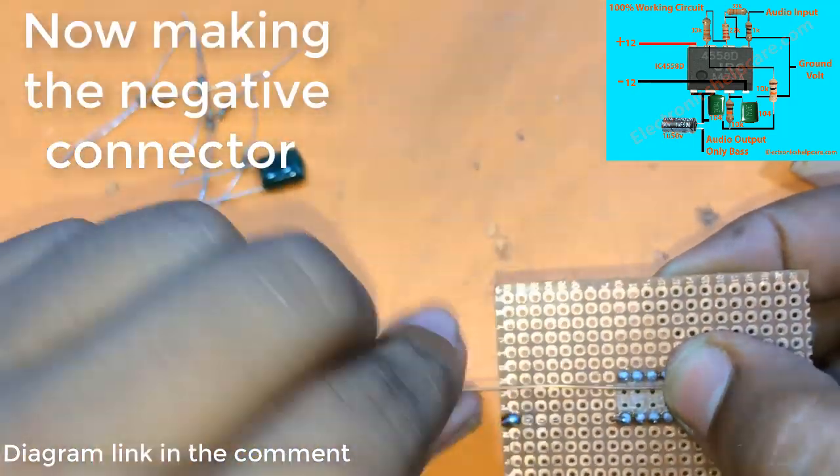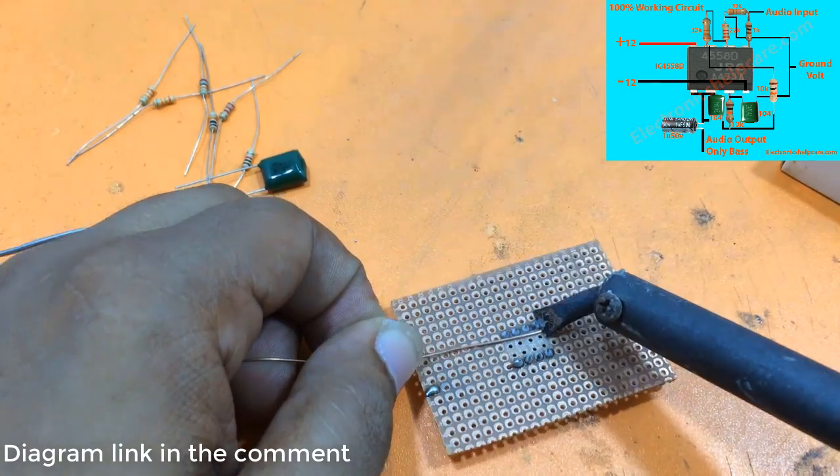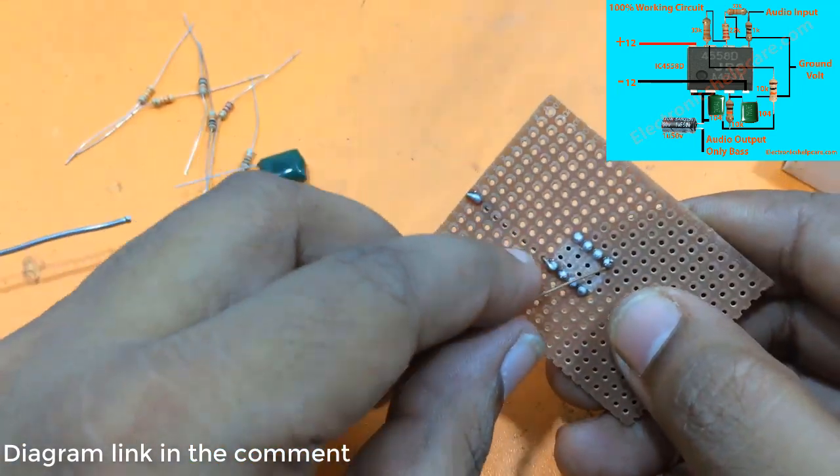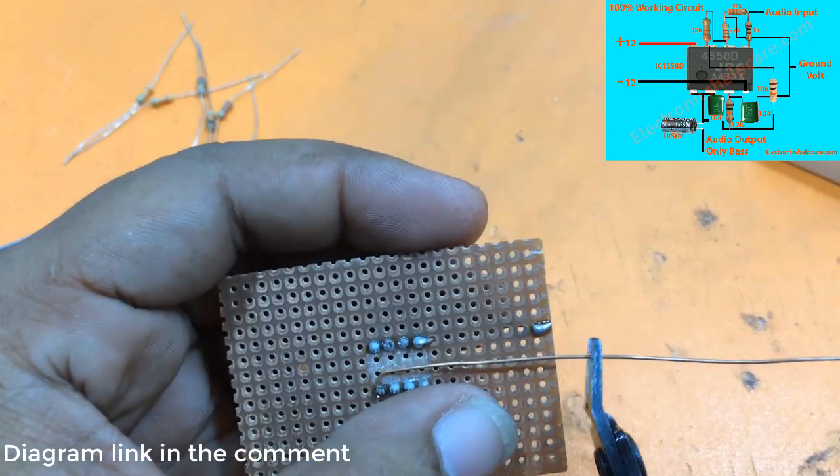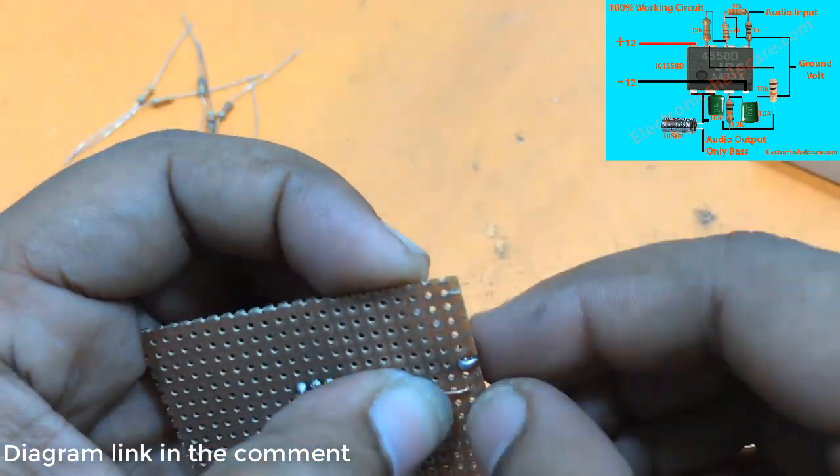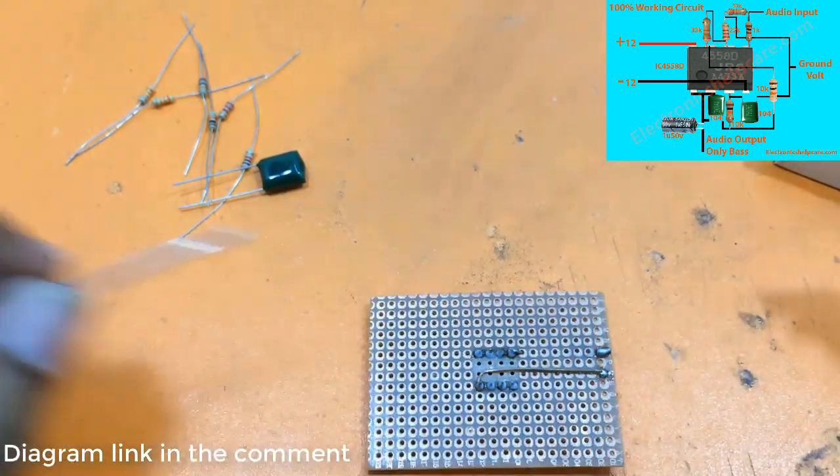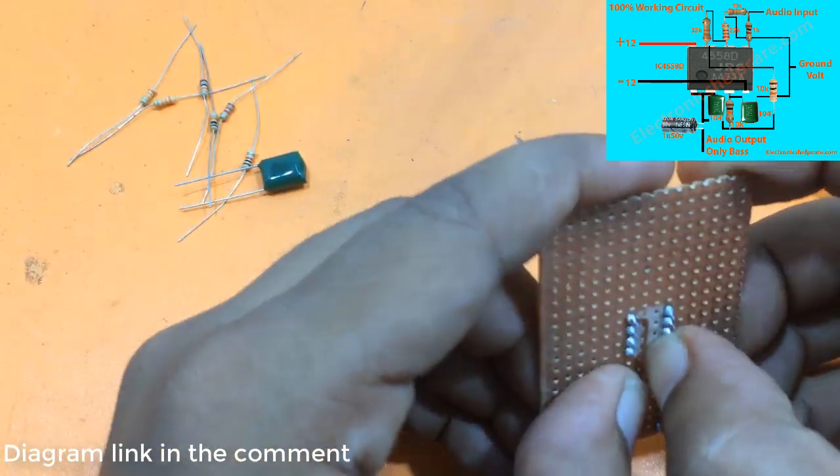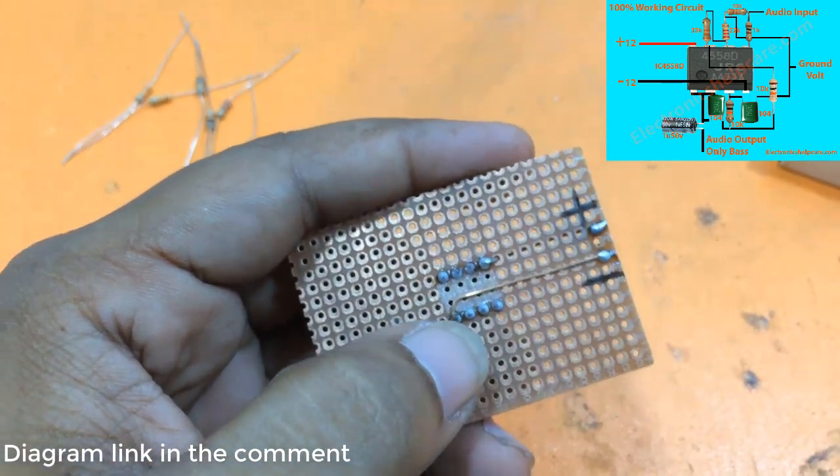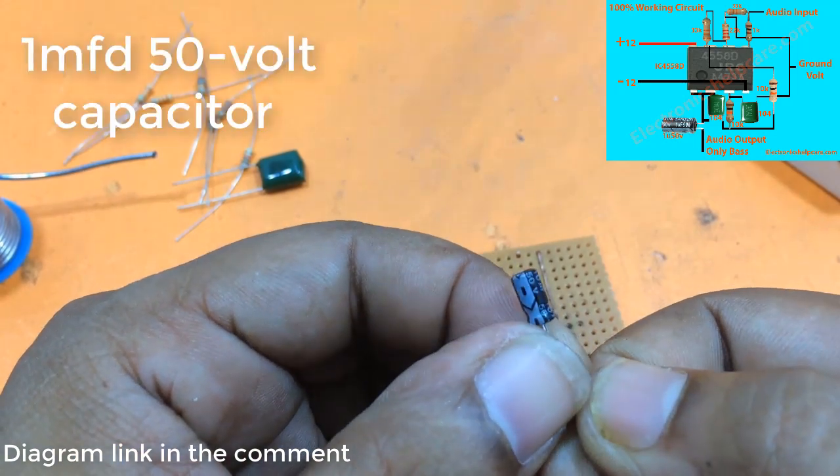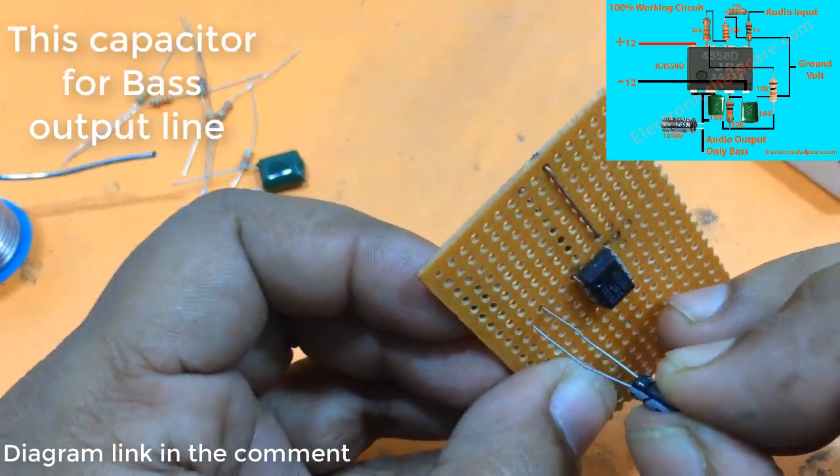Now making the negative connector. One MFD 50 volt capacitor. This capacitor for base output line.